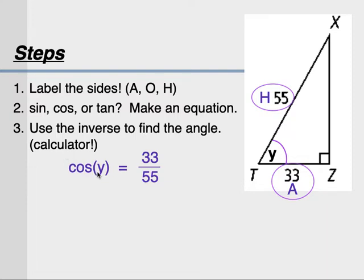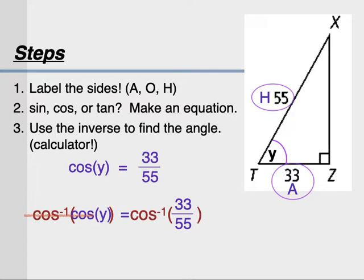Now to get Y by itself, we have to cancel out the cosine. The only way to cancel out a cosine is to do its opposite, inverse cosine. So copy your equation a second time, but with more space, so that you can inverse cosine both sides of your equation. Now whatever you do to one side of an equation, you must do to the other. So when we inverse cosine the left to cancel out the cosine, we have to inverse cosine the right. So we've got that Y equals inverse cosine of 33 over 55.